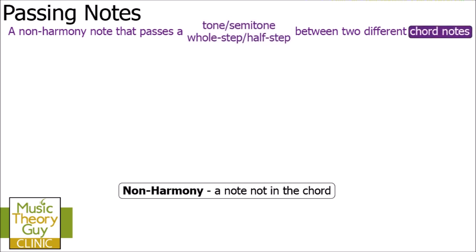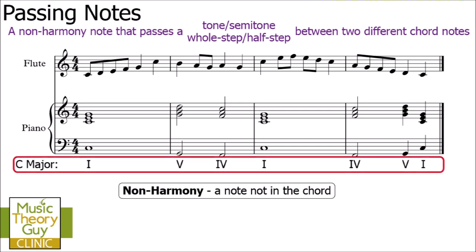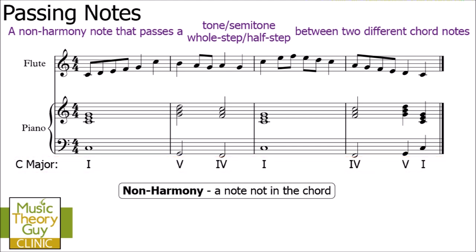Now let's look at chord notes. Here's a piece of music with a melody played by the flute and some basic chords played by the piano. Underneath the piano chords I've put the chord numbers using Roman numerals. In this first bar, I've used chord one, and the notes in chord one of C major are C, E, and G — highlighted in green. We can see that most of the notes in that first bar played by the flute are chord notes.